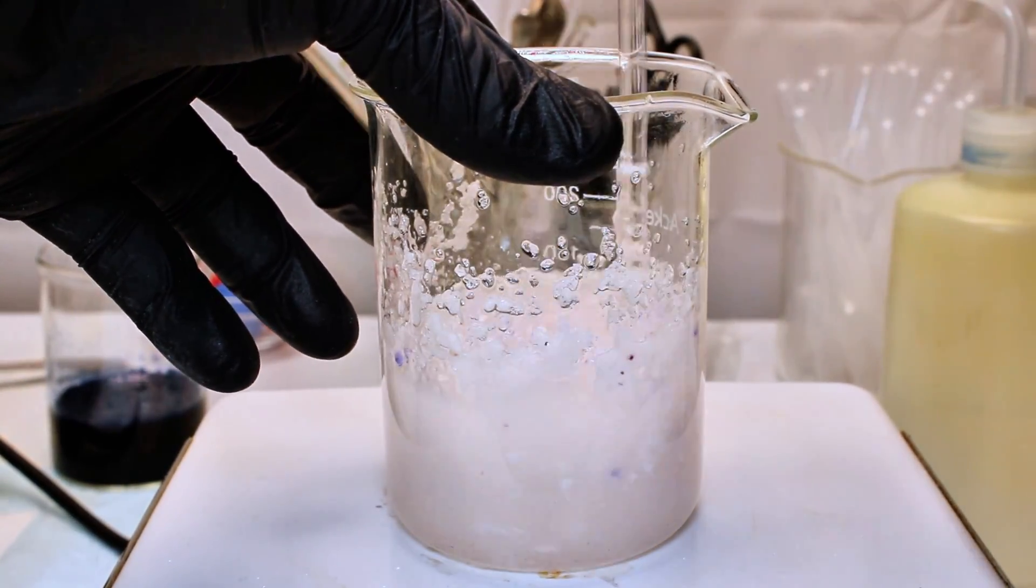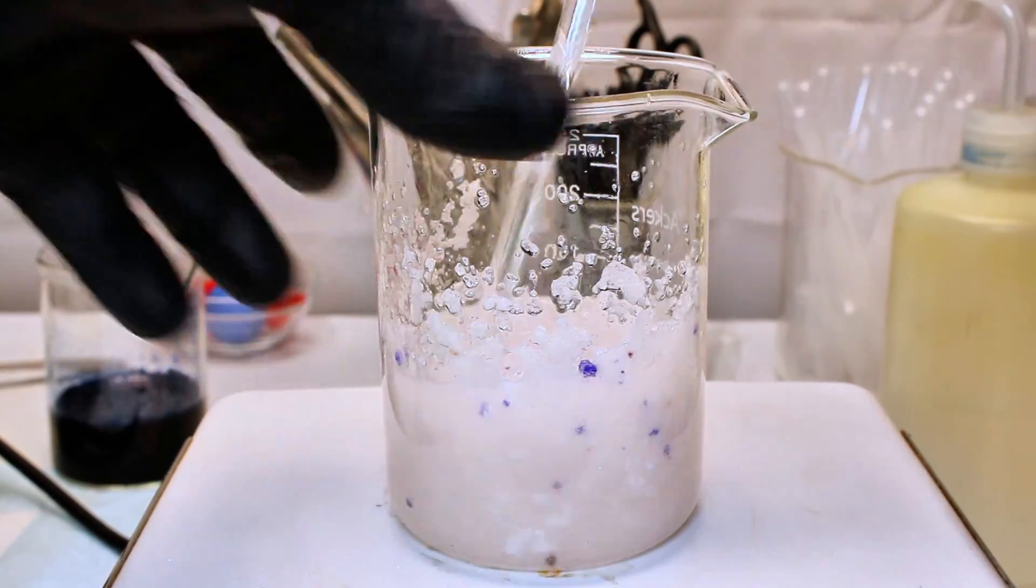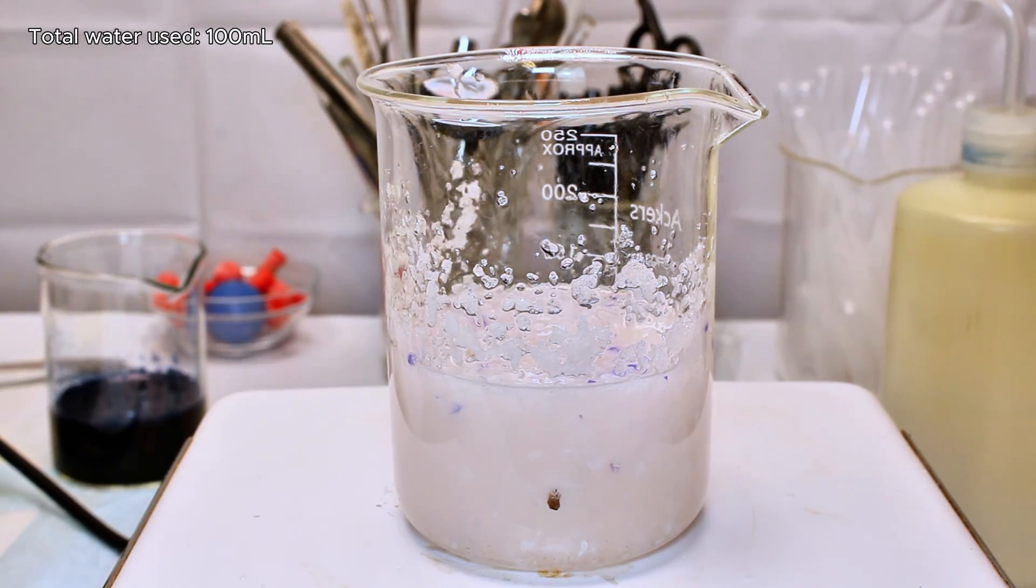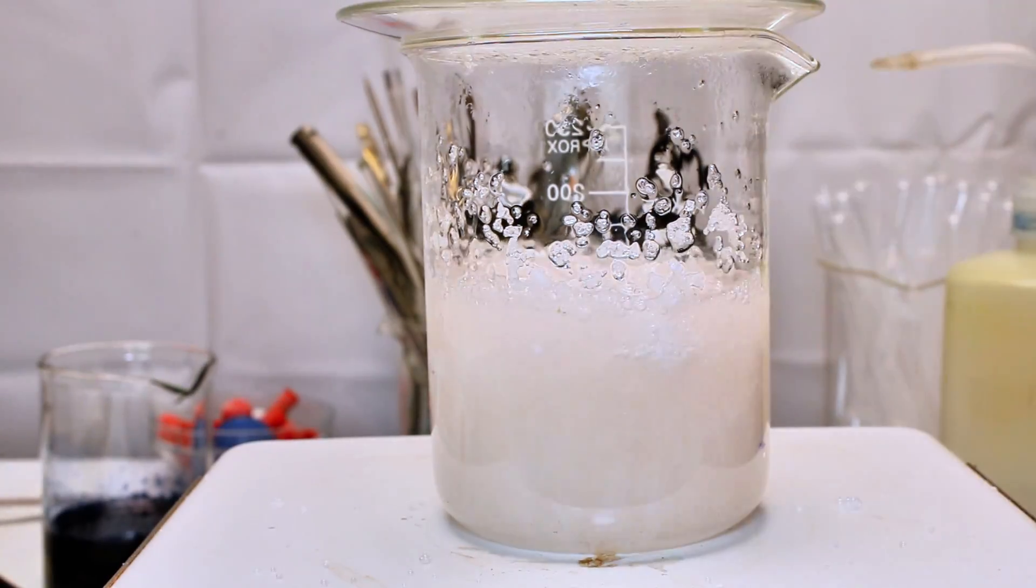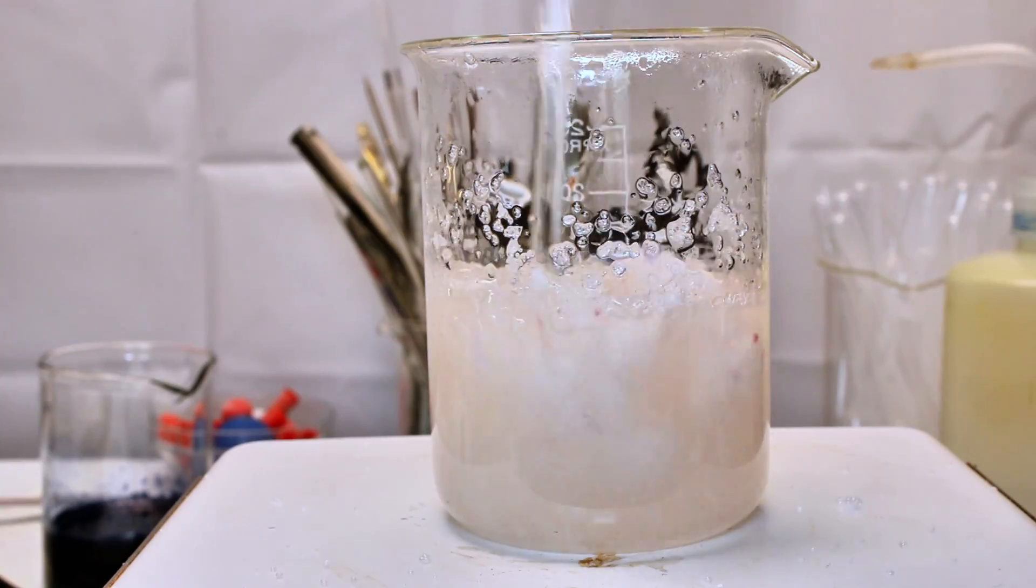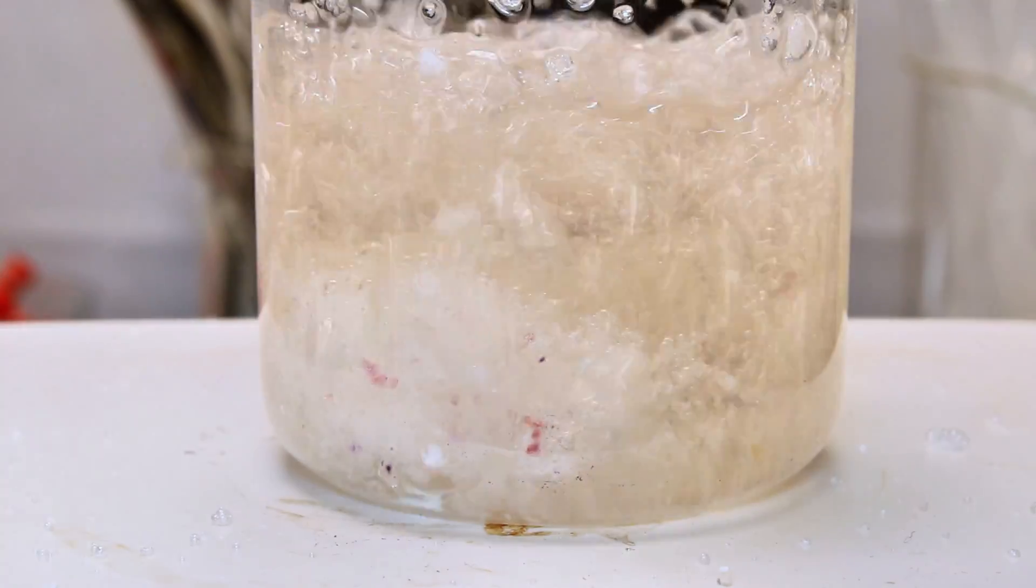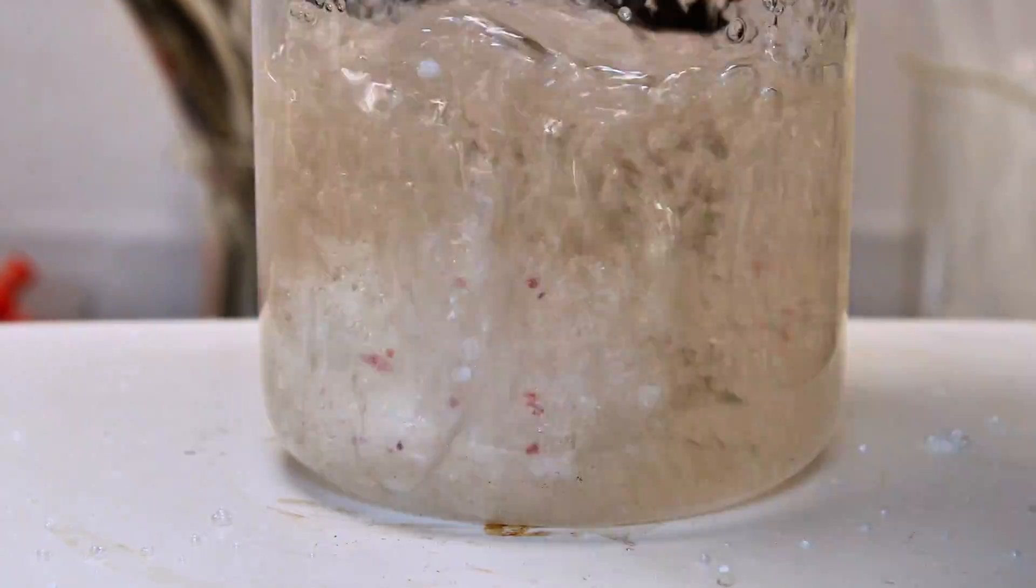Anyway, once it calmed down a bit, I added a bit more water until I had added a total of 100 milliliters. I then boiled the mixture, giving it the occasional stir until all the kitty litter was completely dissolved. At this point, I had a concentrated solution of sodium silicate, which is an extremely versatile chemical more commonly called water glass.